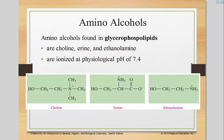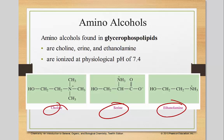The amino alcohols found in glycerophospholipids are choline, serine, and ethanolamine. They are ionized at a physiological pH of 7.4.